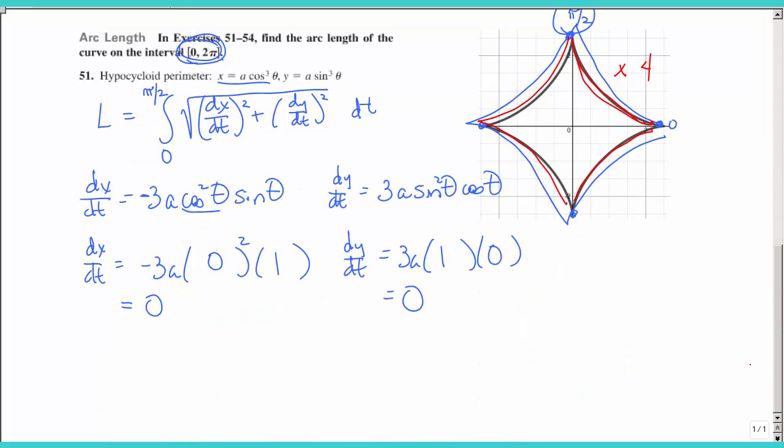So when finding the perimeter of a hypocycloid, you cannot go from zero to two pi, because again, the derivatives are simultaneously equal to zero at different values.